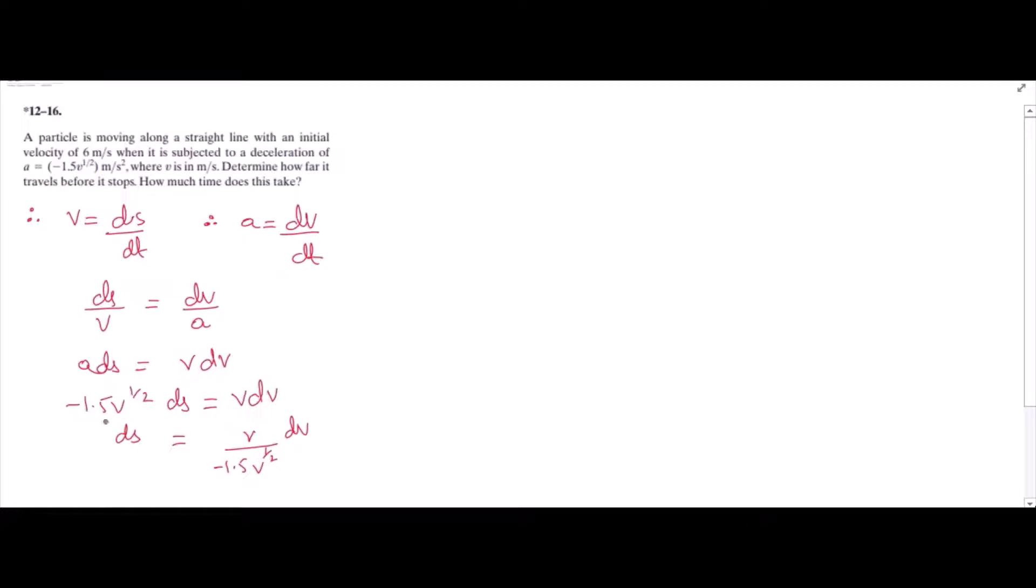Now we can apply integration on both sides. So we have to put the limits. For the left hand side, we have the limit 0 to s. And for the right hand side, we have the final velocity which is 0 and initial velocity is 6 meters per second.